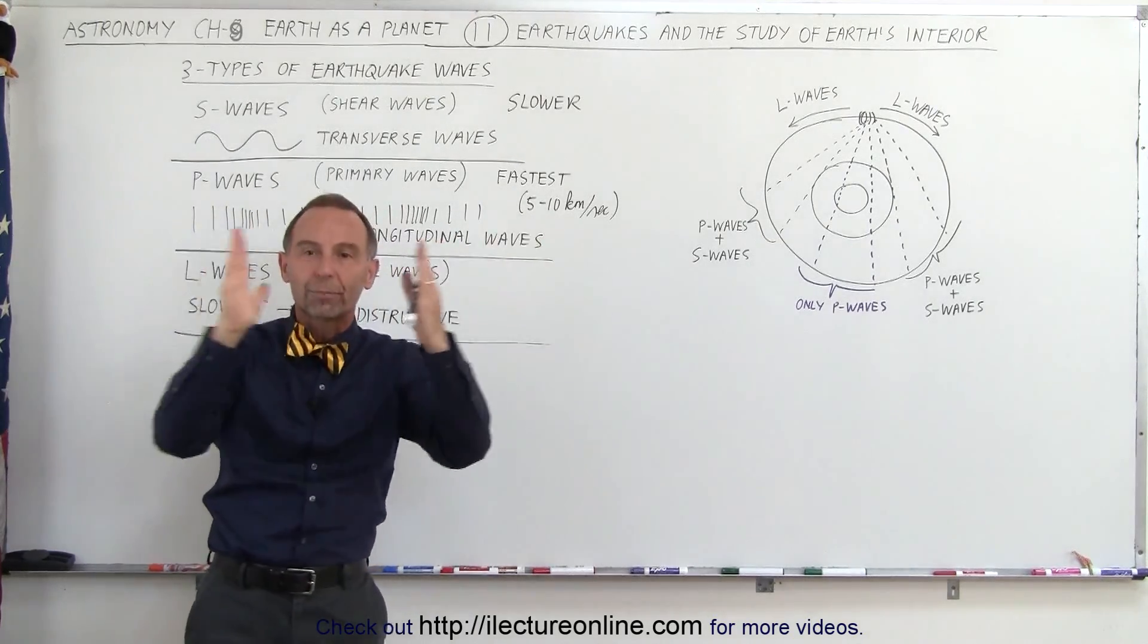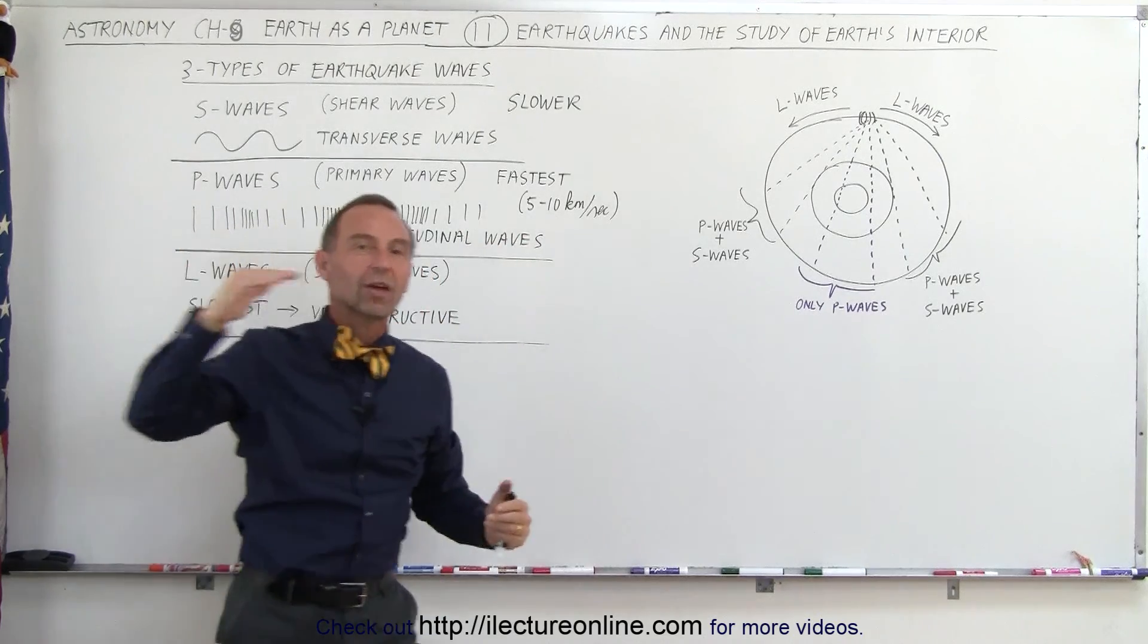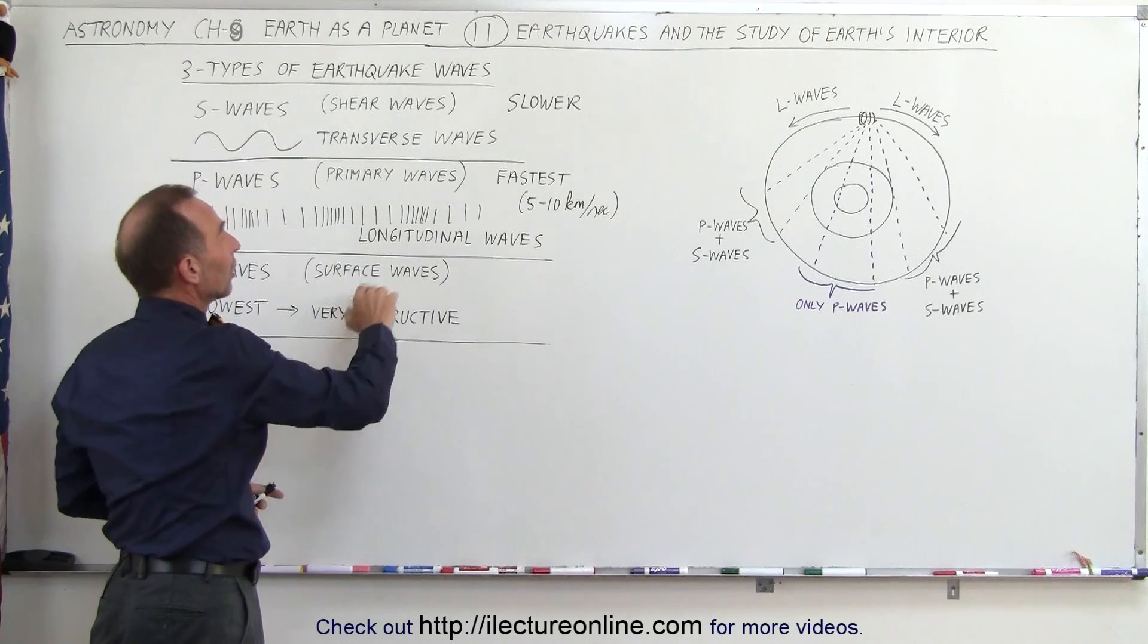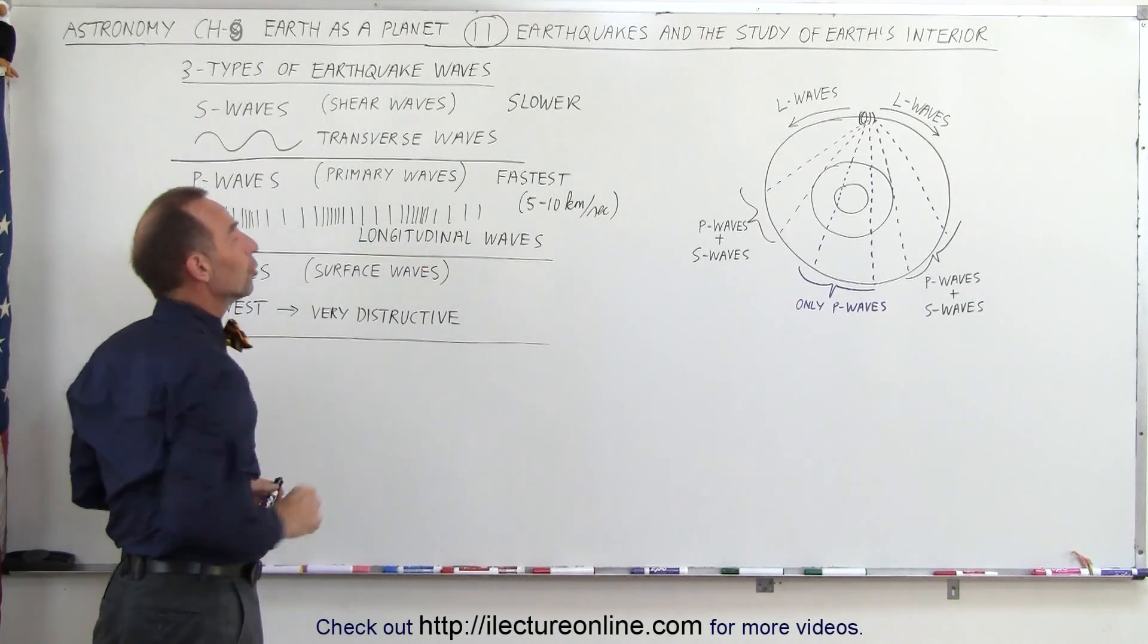As the wave travels in this direction, the compression is in this direction, and so that's how the wave moves through the Earth. Those are the fastest waves, so they're also called longitudinal waves.